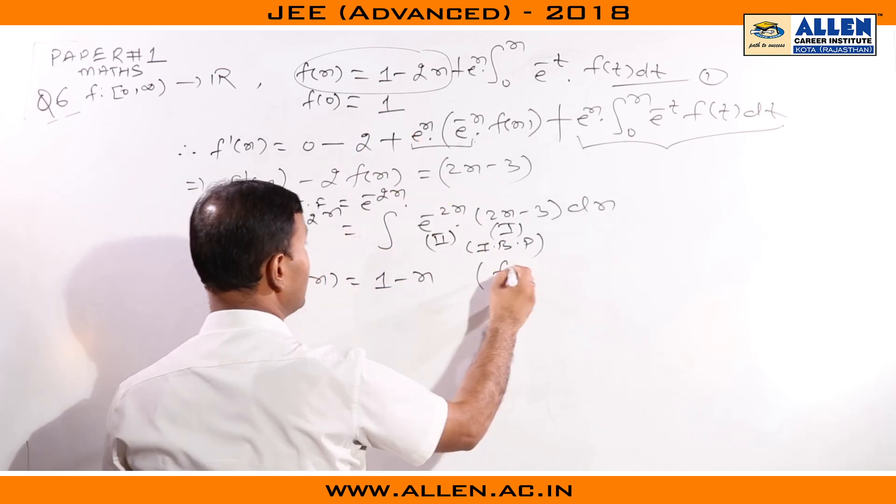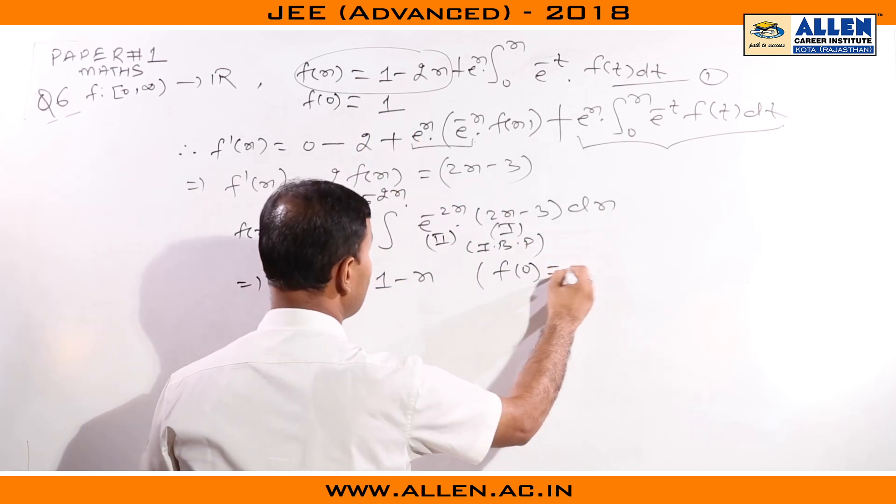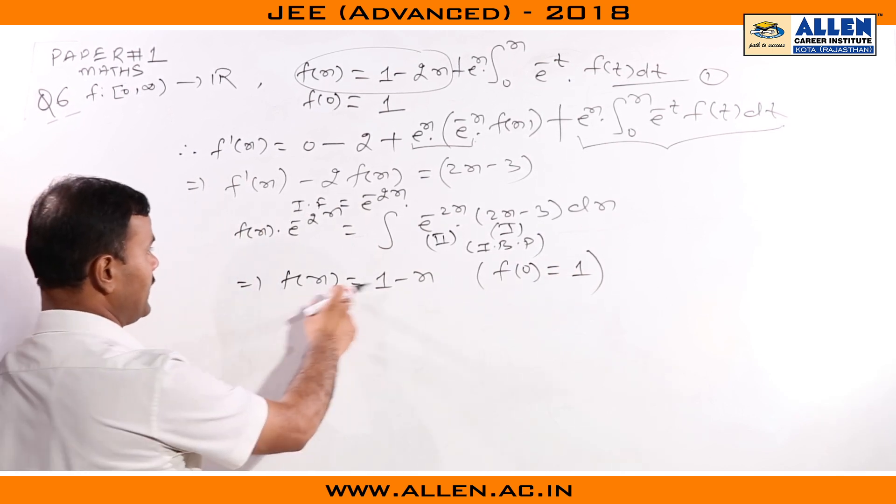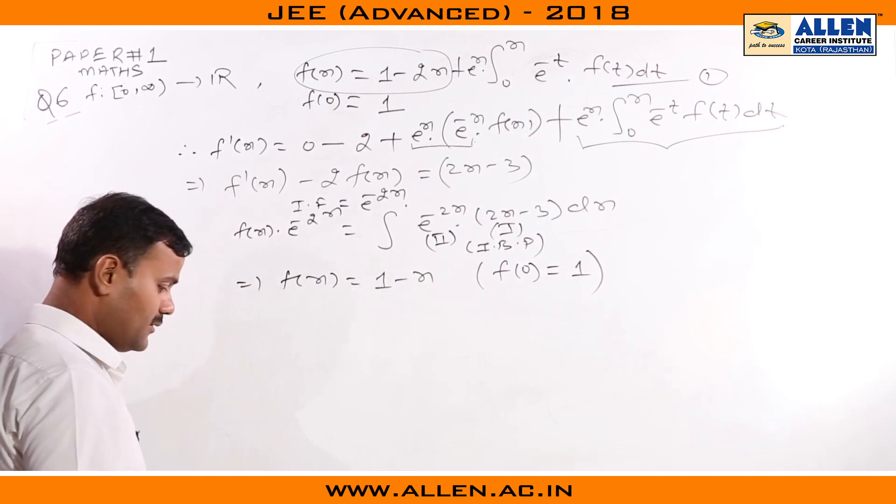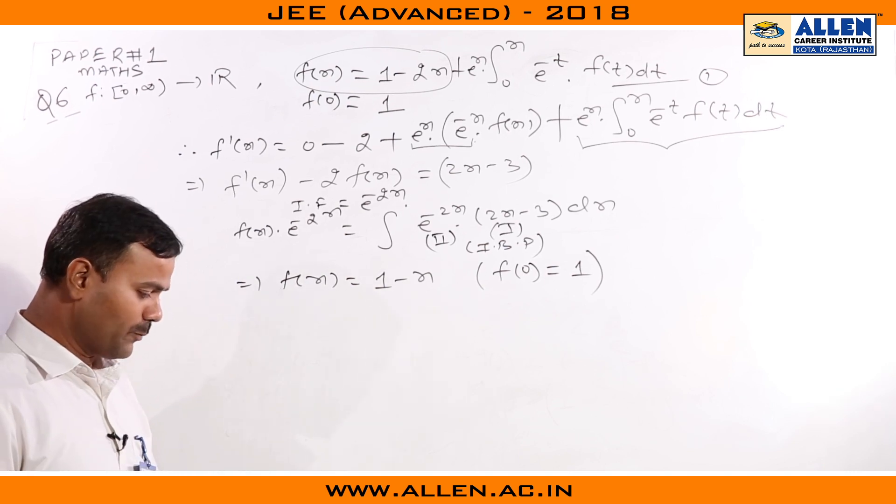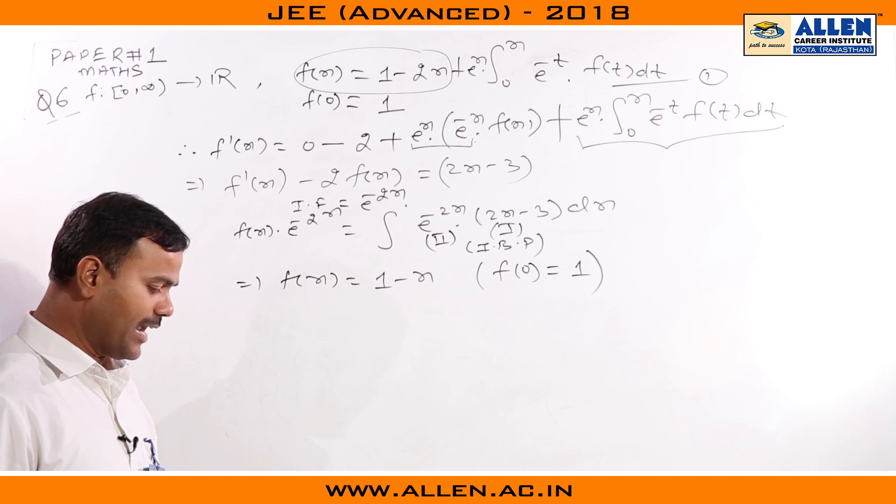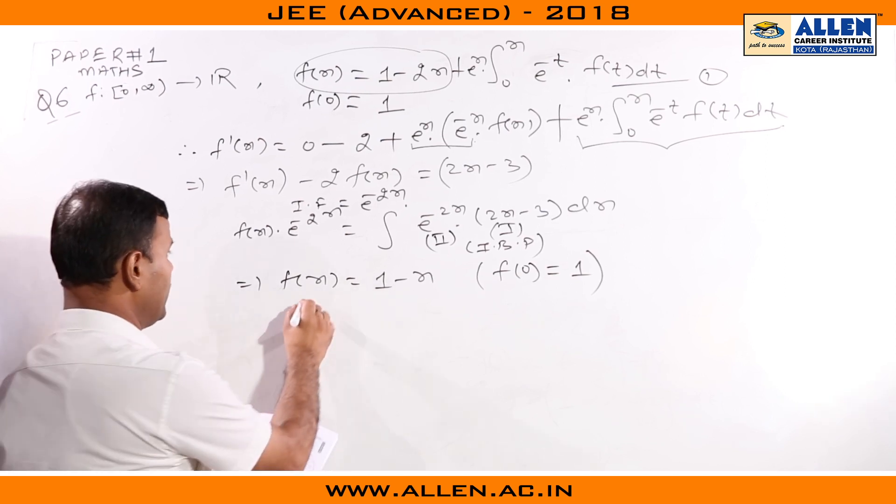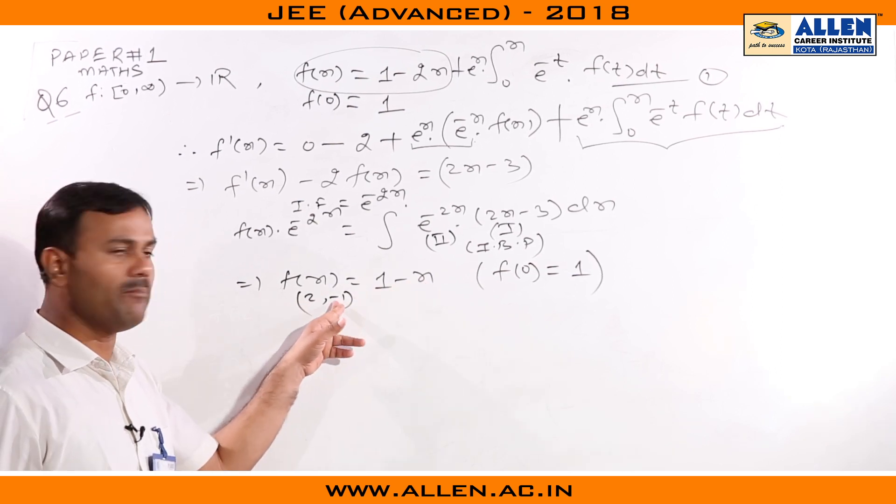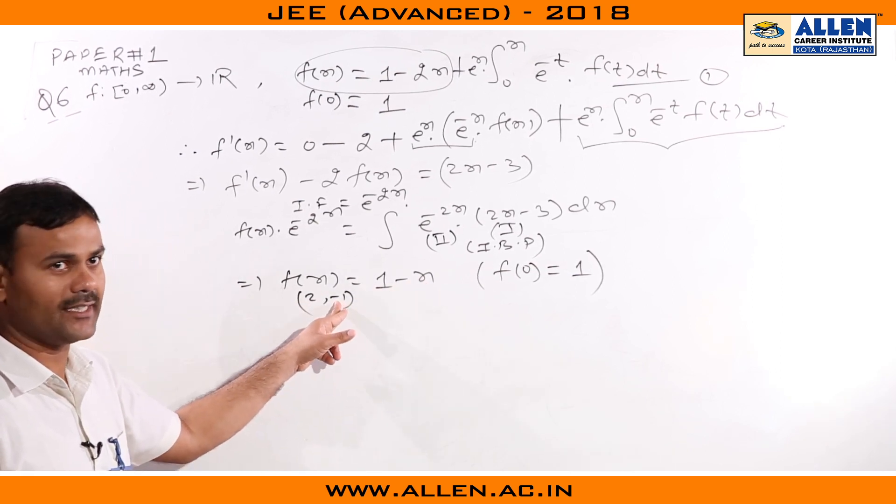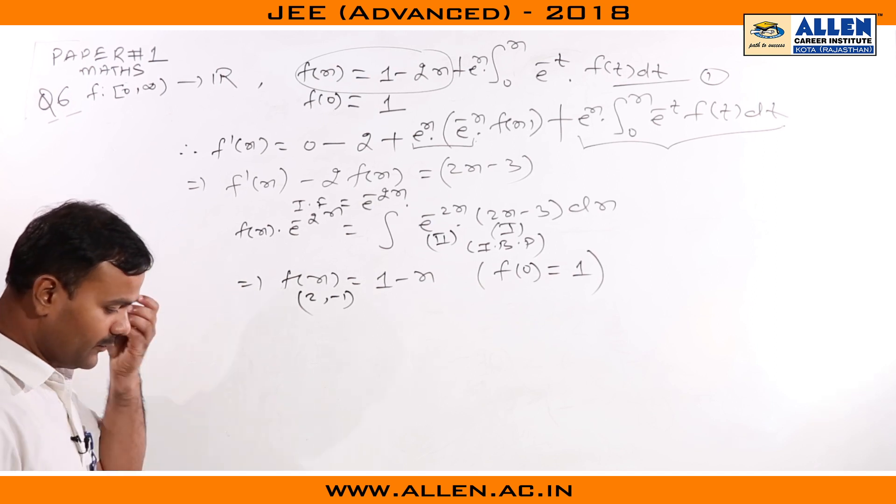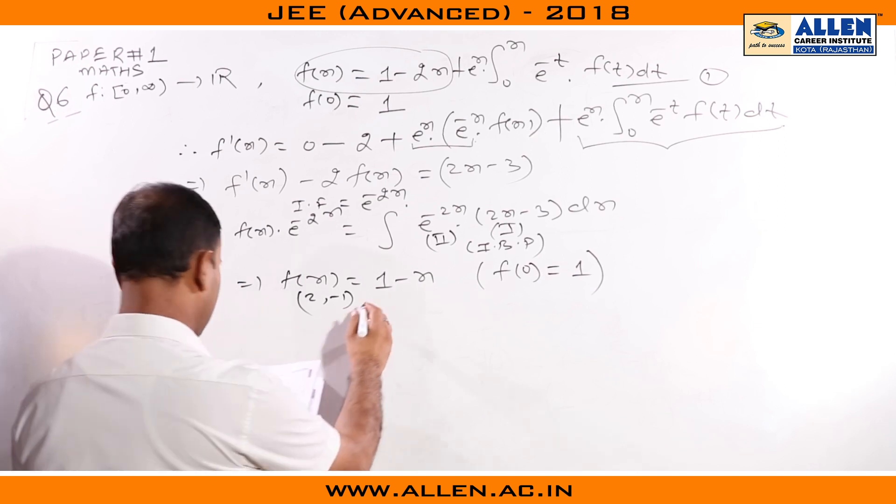Finally, on solving we get f(x) = 1 - x. We found the constant of integration using the fact that f(0) = 1. This f(x) is a straight line. Now we check the options. In option B, we are told the curve y = f(x) passes through the point (2, -1). If we take x=2, we get y = -1, so option B will be the answer.